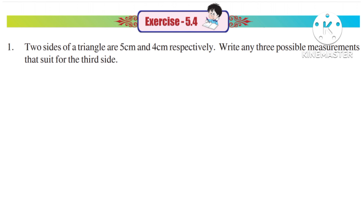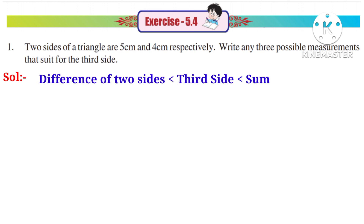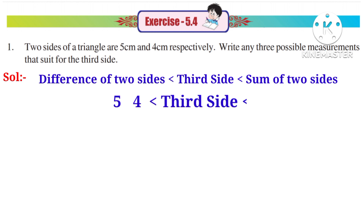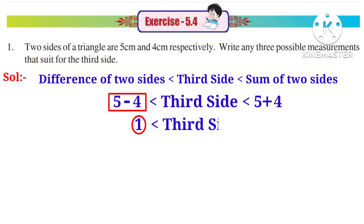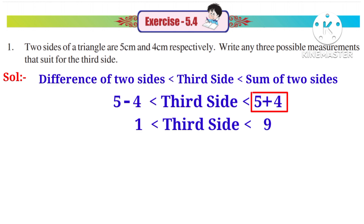Now let us do Exercise 5.4. First problem: two sides of a triangle are 5 cm and 4 cm respectively. Write any three possible measurements for the third side. Solution: the difference of two sides is less than the third side, which is less than the sum of the two sides. So 5 minus 4 equals 1 and 5 plus 4 equals 9, showing that the third side should lie between 1 and 9.